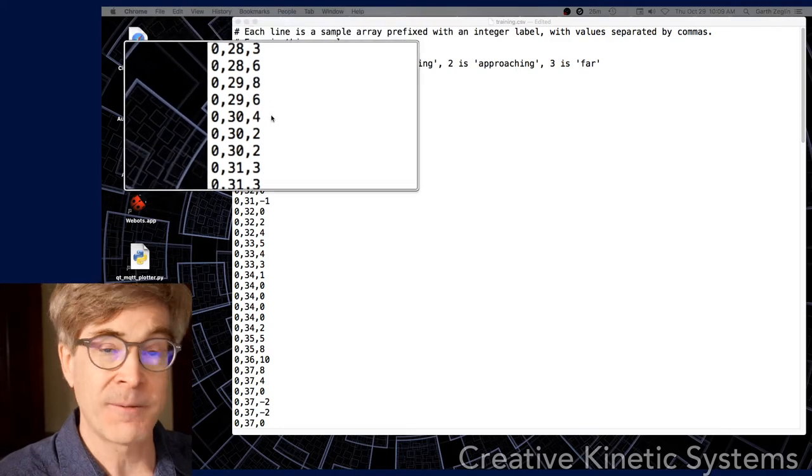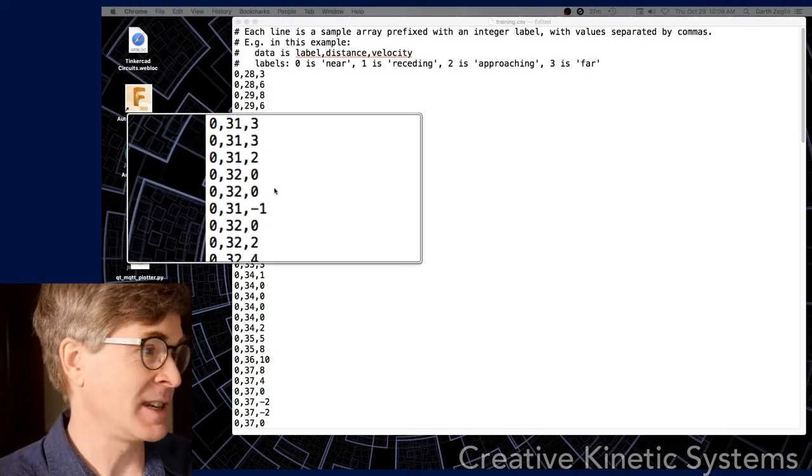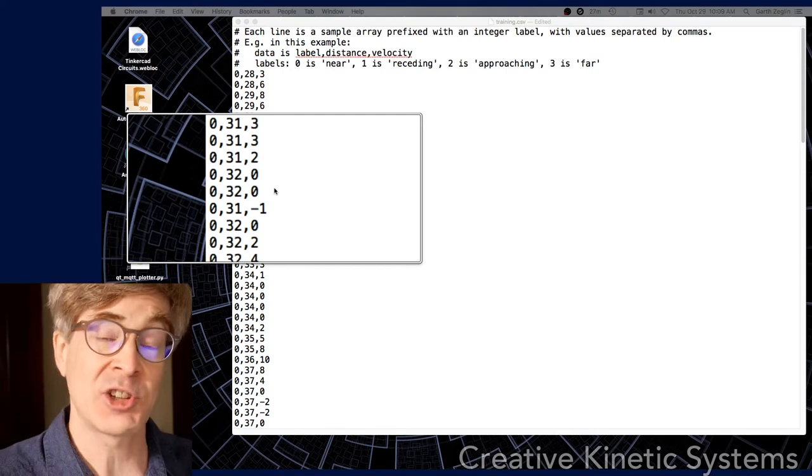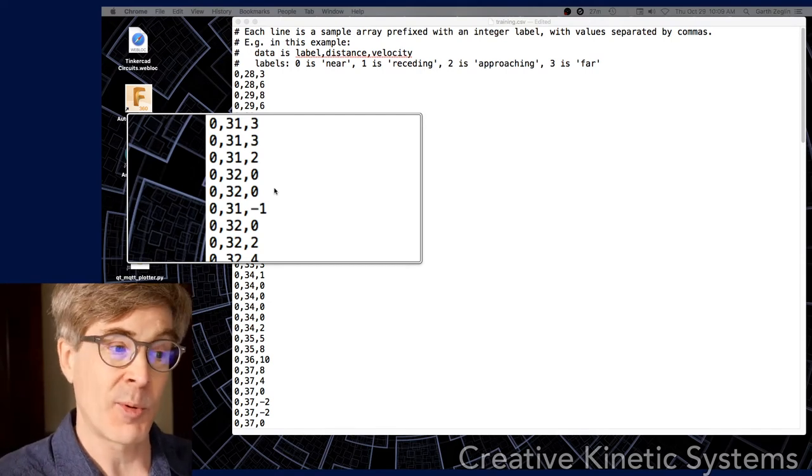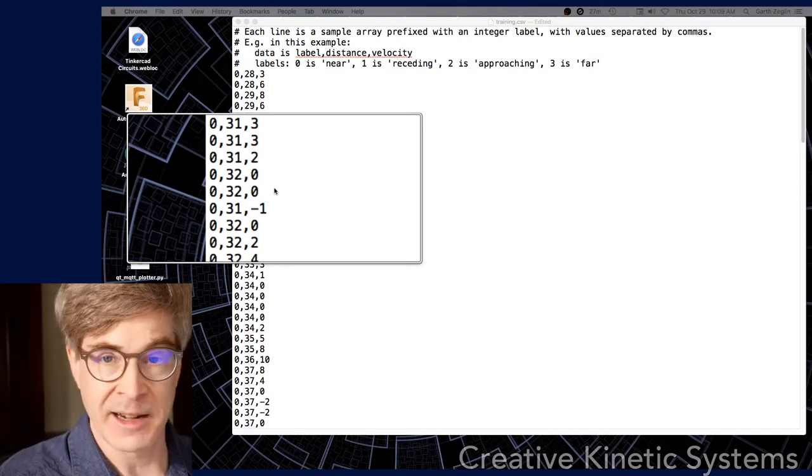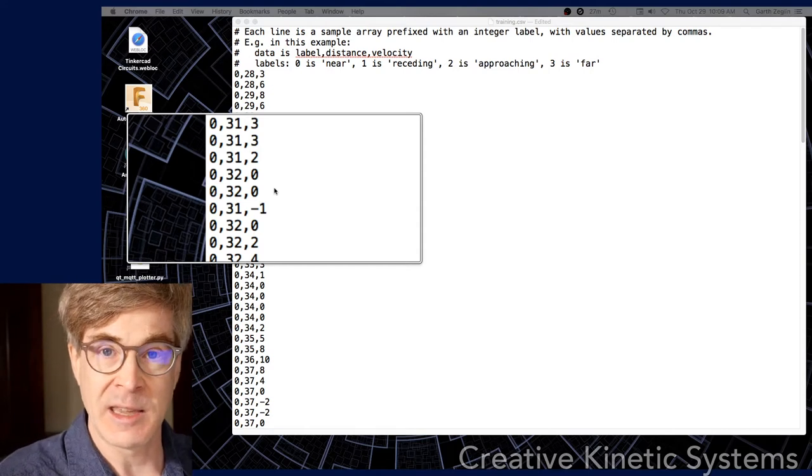I have a long file of points where the first digit in each row here is a hand-generated label that classifies the point. And I'm using just two-dimensional data.